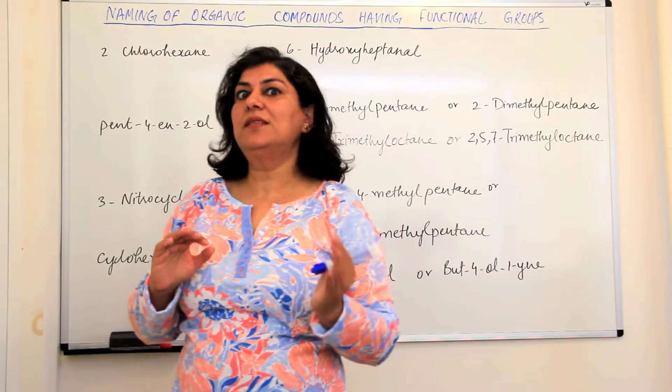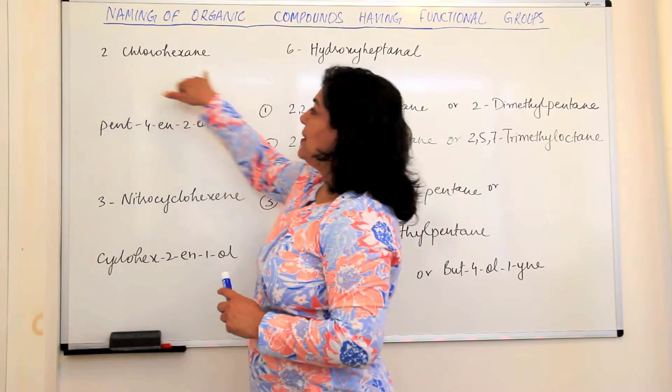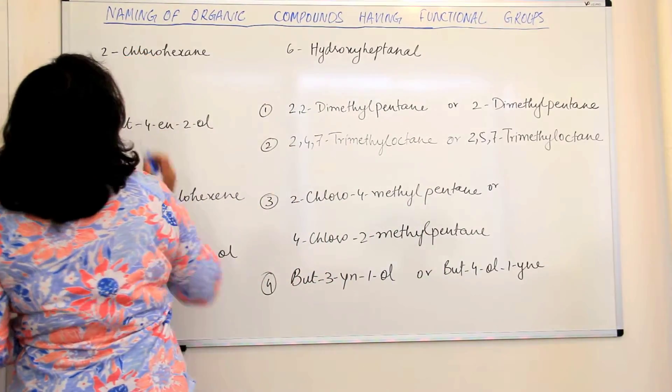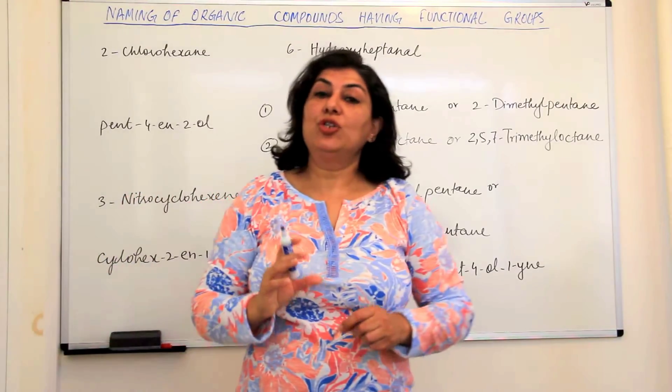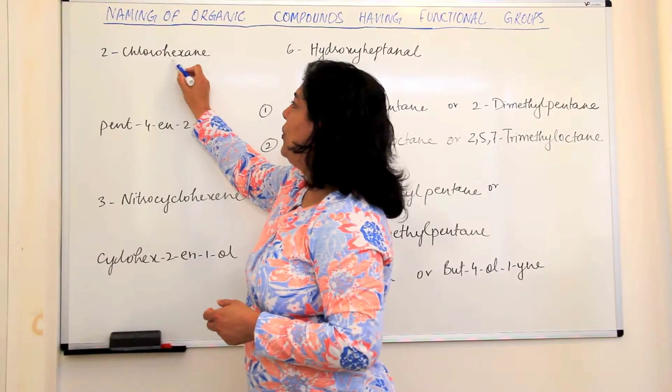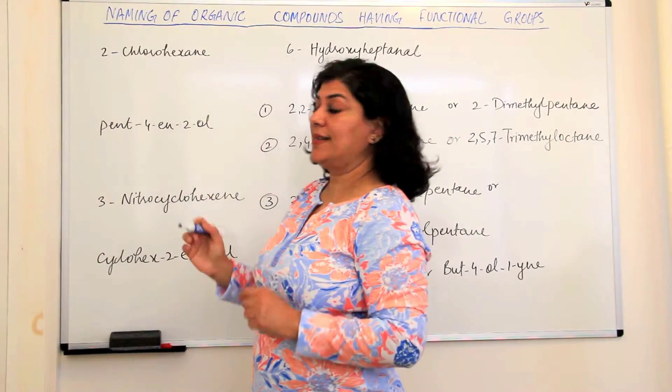I've written a few compounds here and the name is given and we are supposed to write the structure from the name. Believe me, this is easier than naming compounds. What do you do when you look at a name? It is 2-chlorohexane. What is the first thing that we notice in the name? It is hex, the word root. Always start with the word root. The word root is hex, it means there should be six carbons.